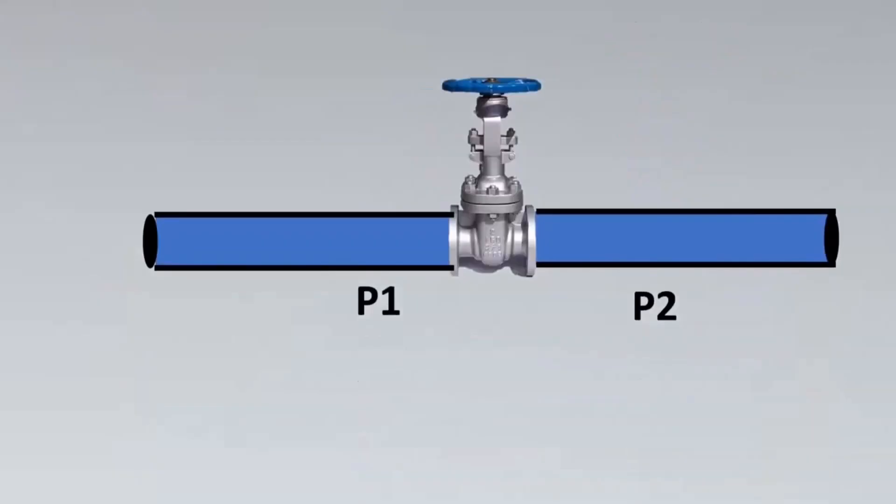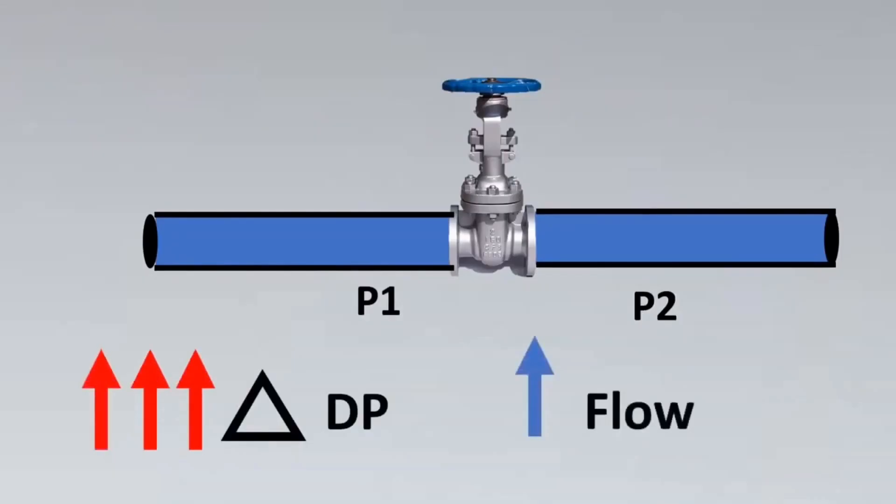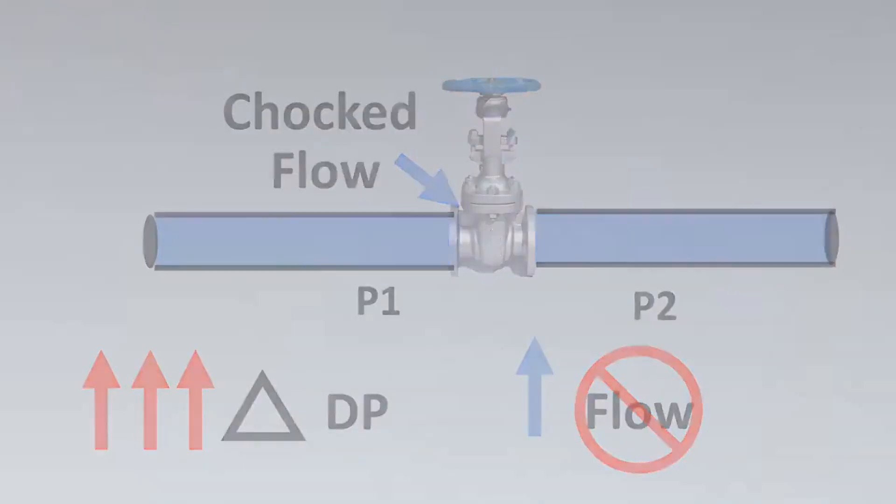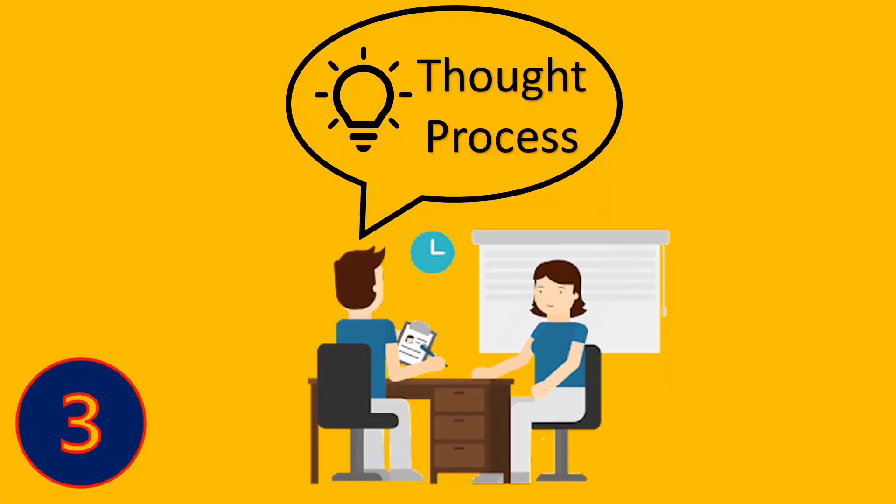Imagine this is your valve and this is your pressure drop happening. We are very sure that if we increase DP, there is going to be an increase in flow. But we keep increasing DP, at a point of time flow will not increase. This point is called choke flow.